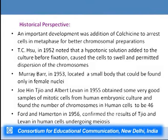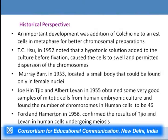Colchicine was an important development, used to arrest cells in metaphase for better chromosomal preparation since chromosomes are most condensed and best visualized at metaphase. T.C. Hsu in 1952 noted that a hypotonic solution added to culture before fixation caused cells to swell and permitted dispersion of chromosomes. In 1953, Murray Barr located a small body found only in female nuclei — now known as the Barr body. Joe-Hin Tjio and Albert Levan in 1955 obtained excellent samples of mitotic cells from human embryonic cultures and concluded that the human chromosome number is 46.